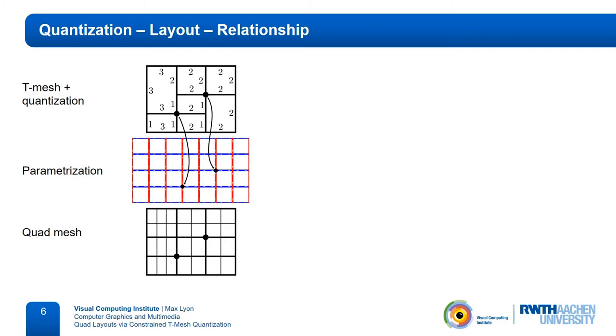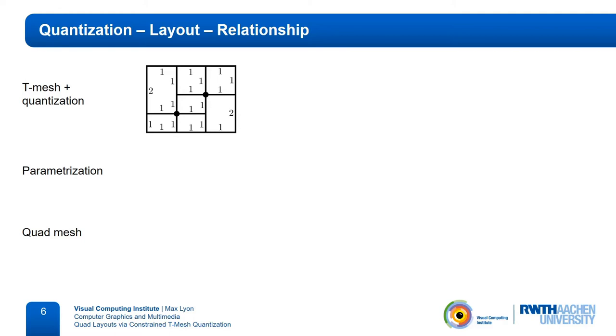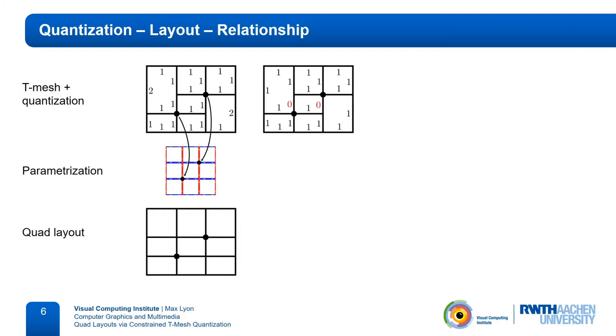Since we are only interested in the layout given by the edge loops emerging from layout vertices, we can try to make the quantization as coarse as possible, such that all quads in the resulting quad mesh already correspond to the layout patches. We can go coarser than this by assigning zero lengths to some arcs. If these two arcs are quantized to zero, the two layout vertices lie on the same grid line in the parameterization domain. Thus, they are connected by an edge in the quad layout.